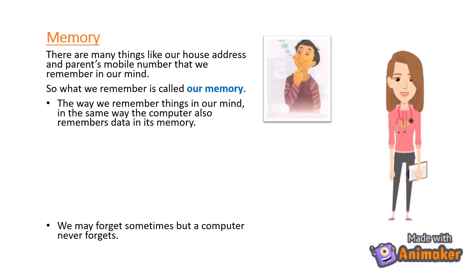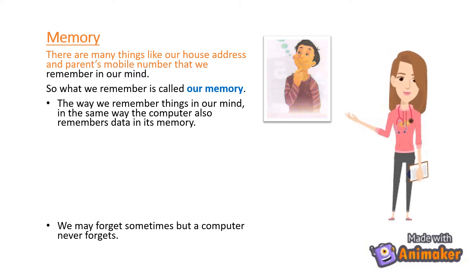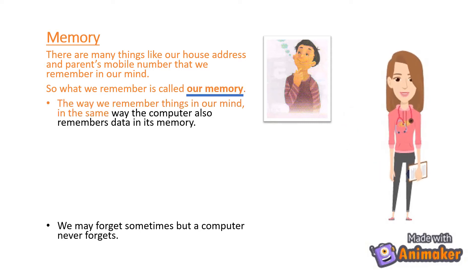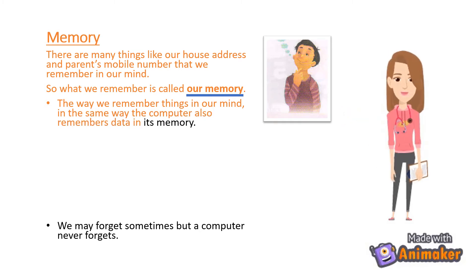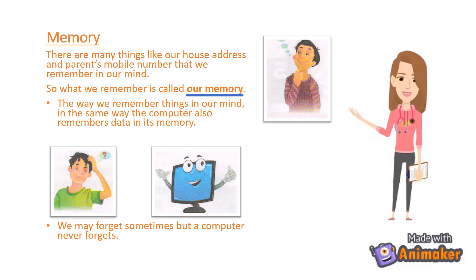Memory: There are many things like our house address and parents' mobile number that we remember in our mind. So what we remember is called our memory. The way we remember things in our mind, in the same way the computer also remembers data in its memory. We may forget sometimes, but a computer never forgets.